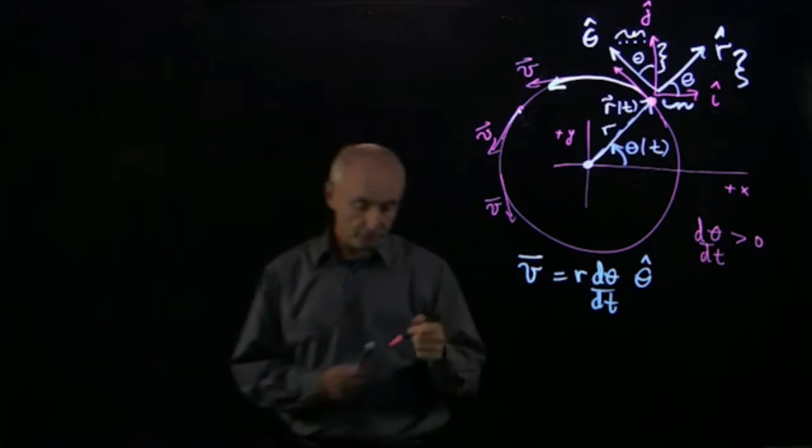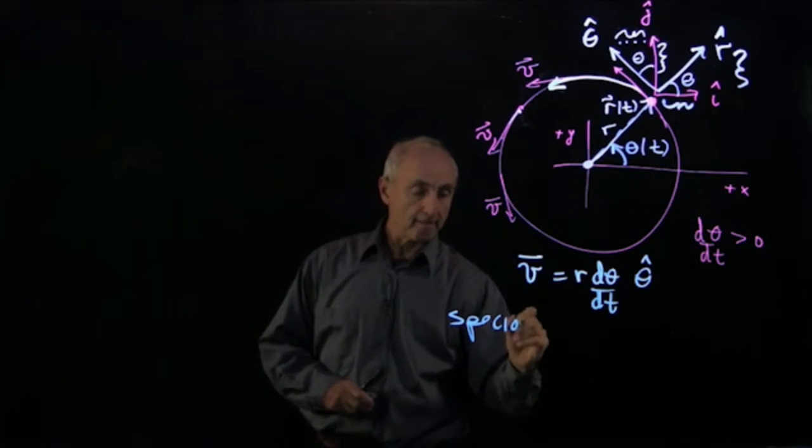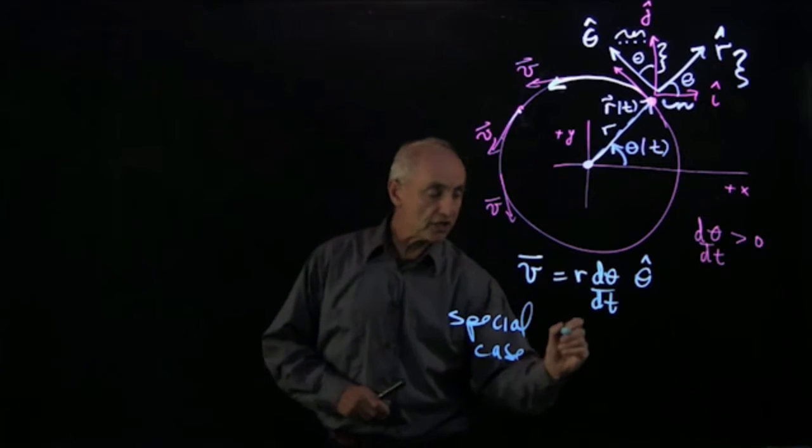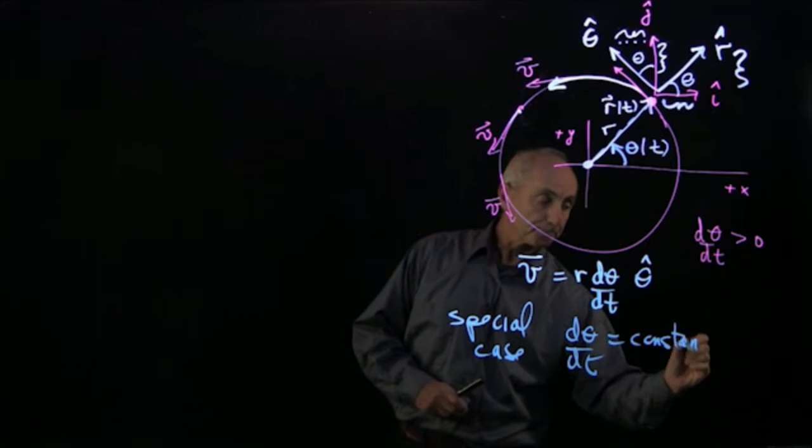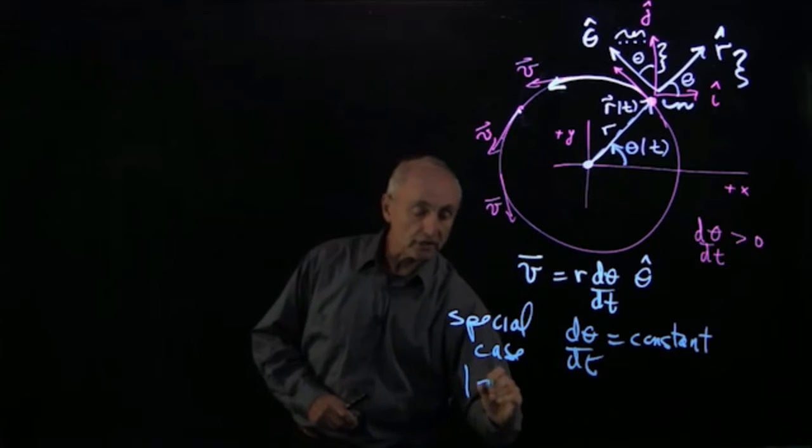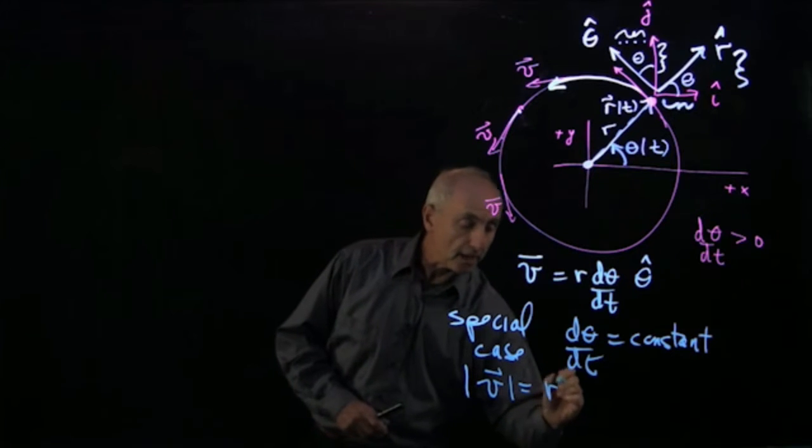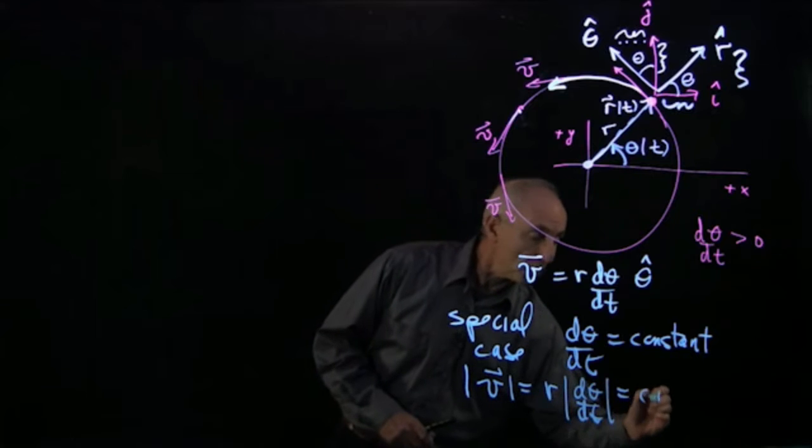Notice that if we consider the special case in which dθ/dt is a constant, in that instance, the magnitude of the velocity v is given by r times the magnitude of dθ/dt, and that is also a constant.